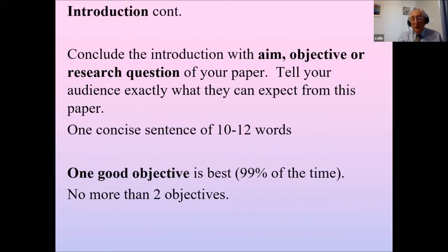Conclude the introduction with an aim, objective, or research question. This is the last sentence of the introduction — one sentence of 10 to 12 words that tells the reader exactly what they are going to find in the paper. It's better to have one good objective and have your paper address one topic and only one topic. If you've got a project with three or four objectives, that means you can get three or four papers published.